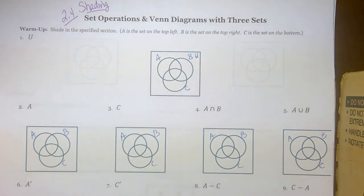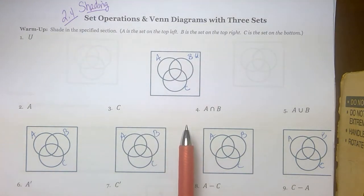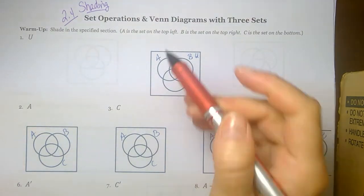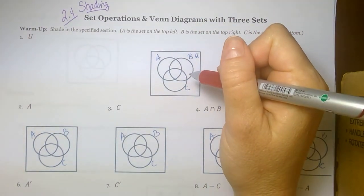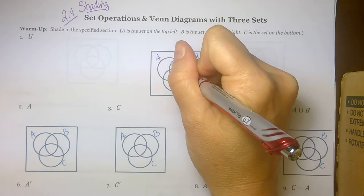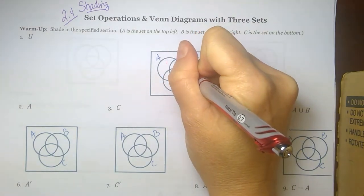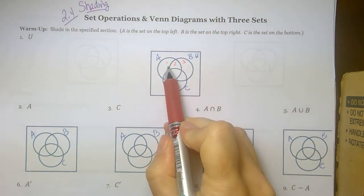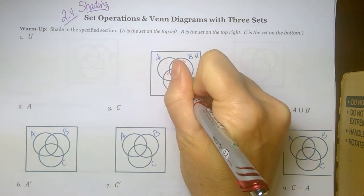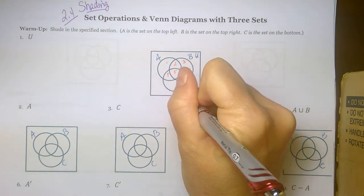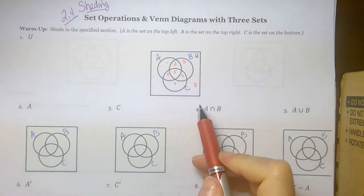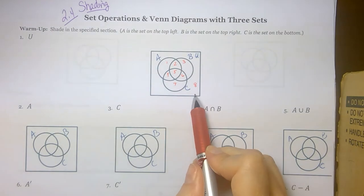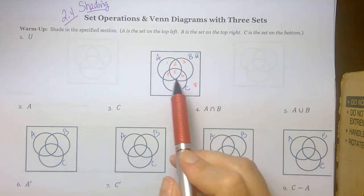When we have three loops available, we create eight total regions. We're going to label them with Roman numerals in our other packet, but here I'll just use Arabic numerals. So we have regions one through seven, and then the region outside the loops but still inside the universal set is region eight.